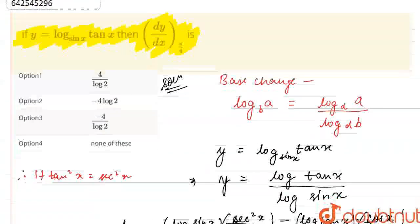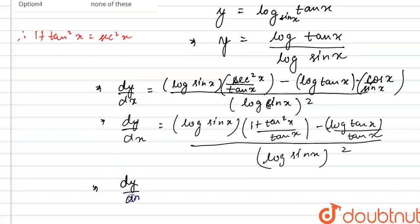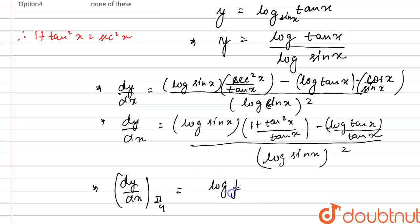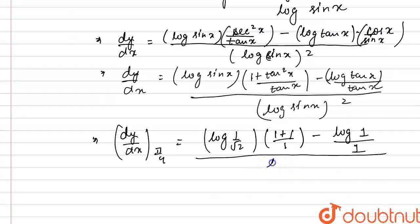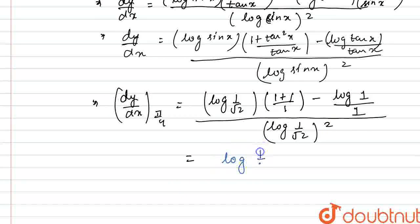Now we need to find the value of dy/dx at x = π/4. Substituting: sine of π/4 is 1/√2, so we get log of 1/√2. Then 1 plus tan(π/4) equals 1, so 1 plus 1 squared divided by tan(π/4) which is 1, minus log of tan(π/4) which is log 1, so that is 0, divided by 1, all divided by log(1/√2) squared.